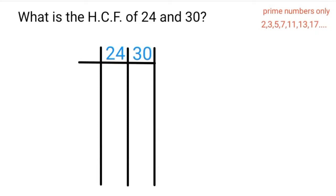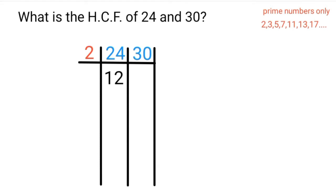The smallest prime number is 2. Can 2 go into both these numbers without leaving a remainder? Yes — both of them are even numbers, so 2 can go into both. So we start with 2. Now, 2 goes into 24 twelve times and 2 goes into 30 fifteen times. Can we use 2 again? Can 2 go into 12? Yes, it can. Can 2 go into 15? No, it can't.